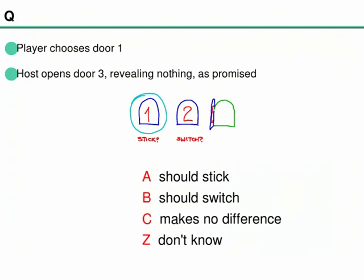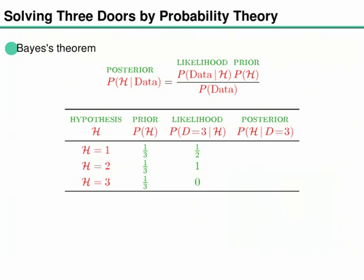The player chose door one, the host opened door three revealing nothing — should you stick, switch, or does it make no difference? Everyone knows you should switch, but what I want you to know is how to answer this sort of problem in general. The general rule for solving inference problems is: write down the joint probability of everything, then condition on what you know.